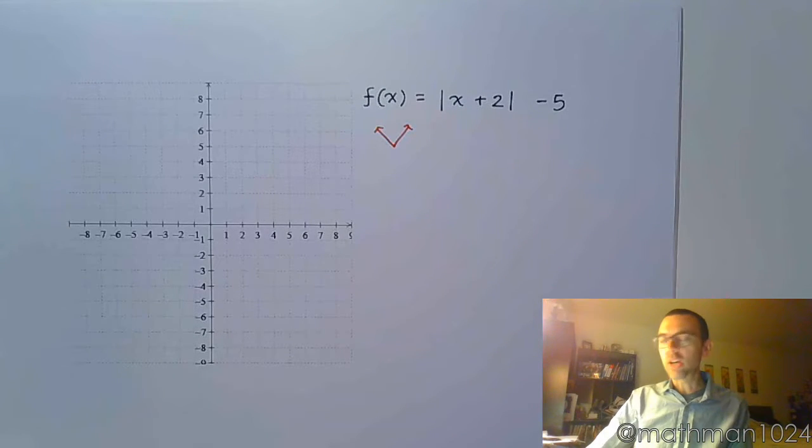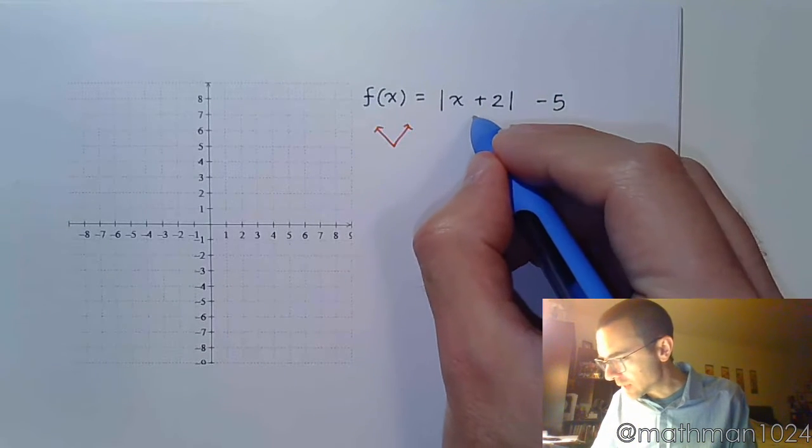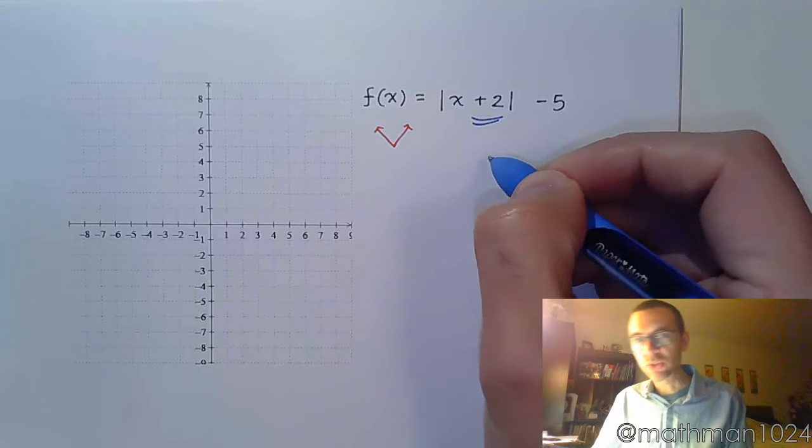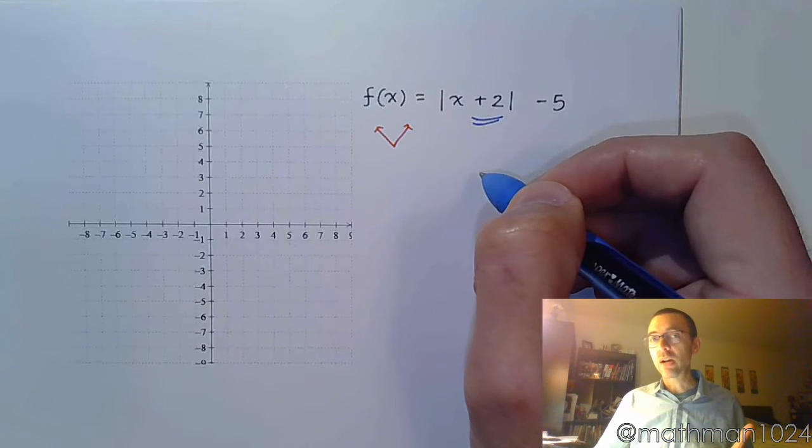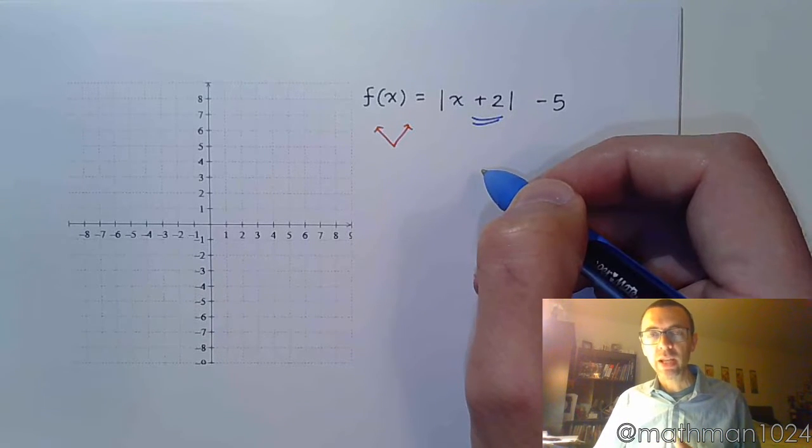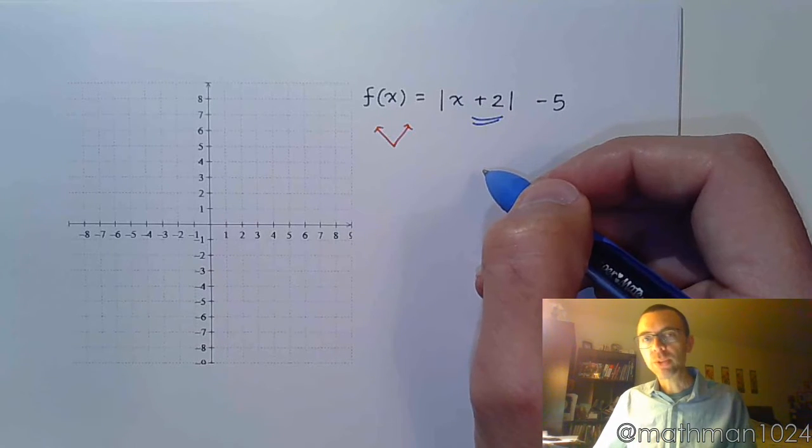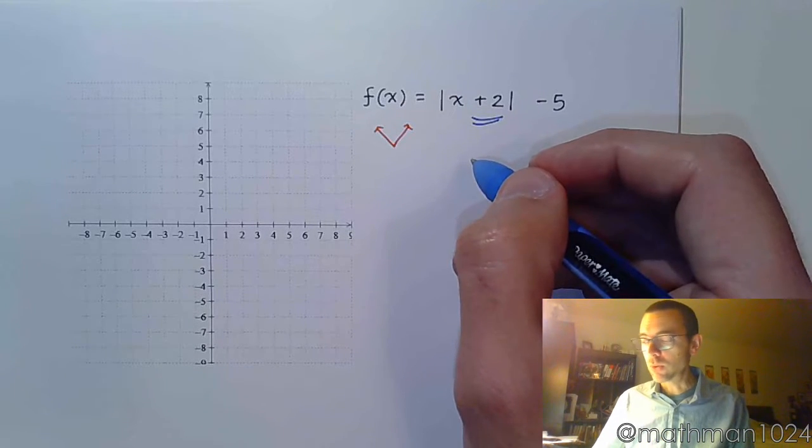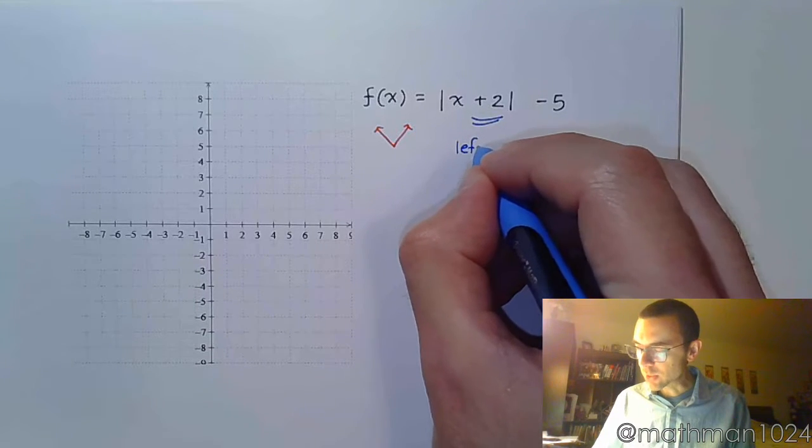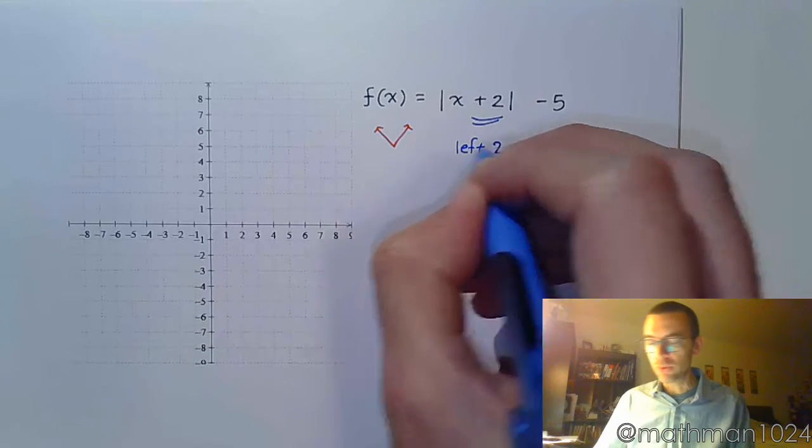Alright, so what have I done with this v-shape? Let's look to the inside. To the inside I see plus 2. Remember IHOD over—when it's inside, it's a horizontal shift opposite of what you see. I see plus 2, so it means I'm actually going to go the opposite direction. I'm going to go to the left 2 units.